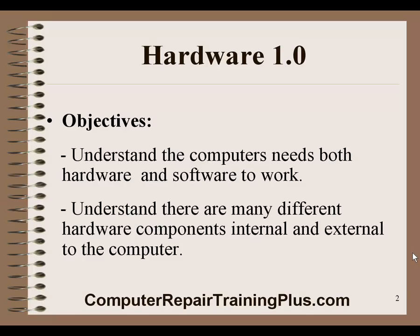These components are internal, such as the CPU, the memory, and video — they're all internal to the computer, internal to the case. External to the computer are other things, such as the mouse, the keyboard, and the monitor, and data is transferred through an input-output device to these devices.